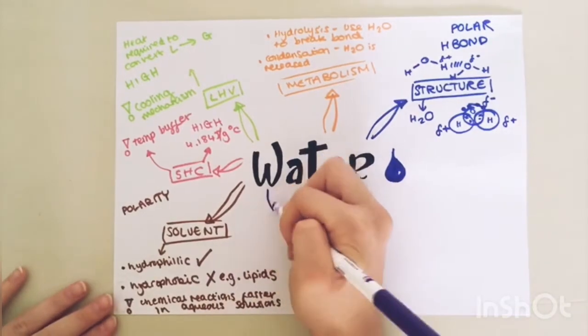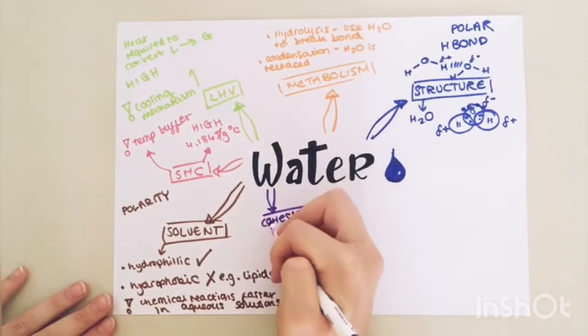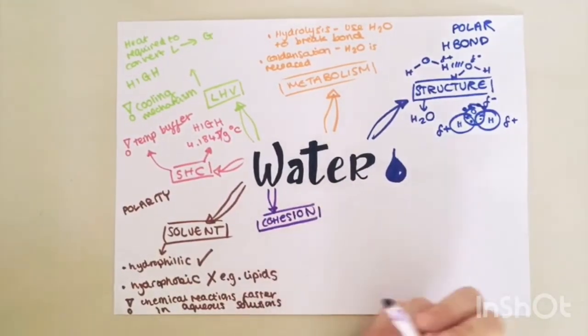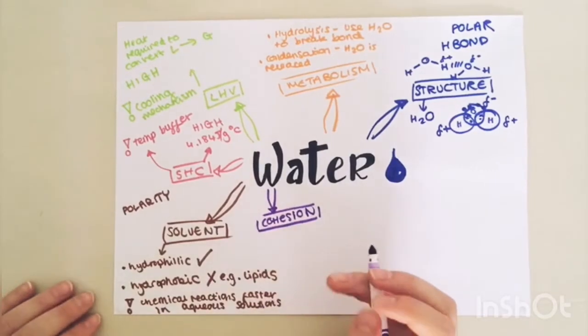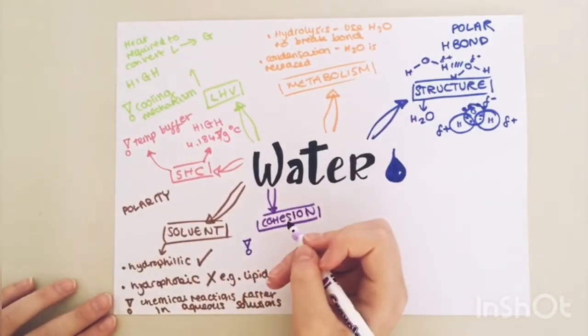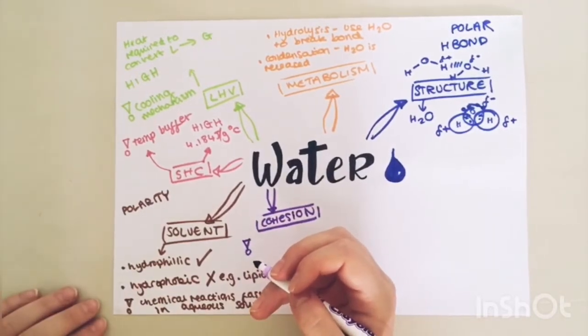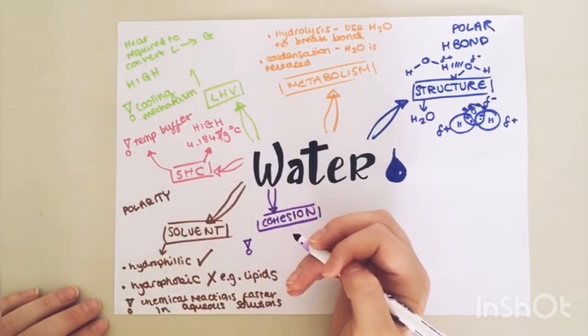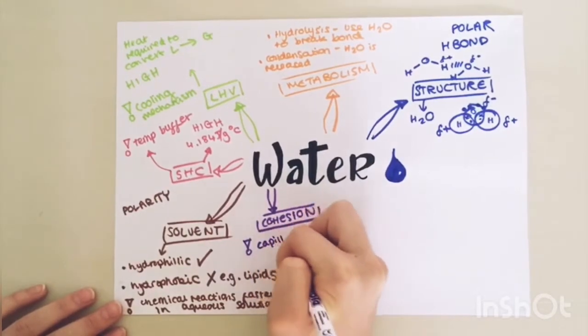Water also has cohesive properties. So cohesion is basically the attraction between molecules of the same type, in this case two water molecules. The reason the water molecules tend to stick together is due to these hydrogen bonds. The biological importance of this is that it allows water to flow, making it great for transporting substances. For example, water is drawn up plants through the xylem narrow tubes against the force of gravity, and this is known as capillary action.